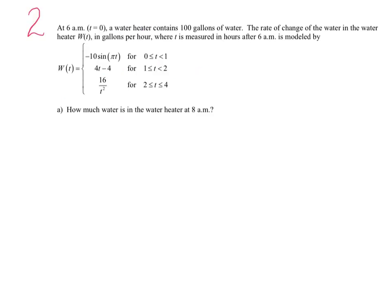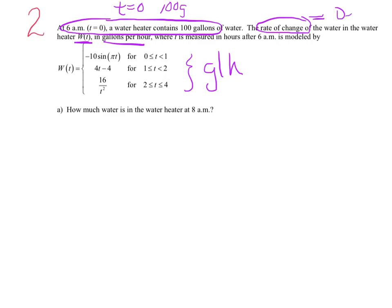Question two. At 6 a.m., that's t equals 0, a water heater contains 100 gallons of water. You can picture this in your own house, a water tank in the basement or something. The rate of change of water in the water heater, W of t, in gallons per hour, where t is measured in hours after 6 a.m., is modeled by this piecewise function. We have separate breakpoints at 1 and at 2. How much water is in the heater at 8 a.m.?